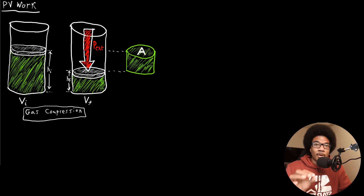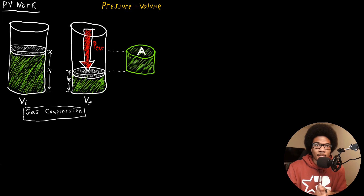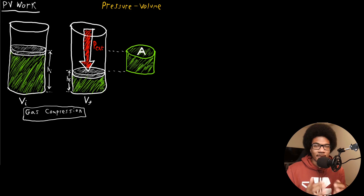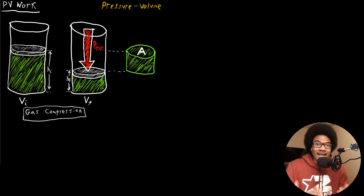Let's look at PV work. PV stands for pressure-volume work. This is a very common type of work related to an expansion or compression of a gas. We've been talking about the first law of thermodynamics — the transfer of energy via heat and work. This is our first real deep dive into any specific type of work: pressure-volume work.